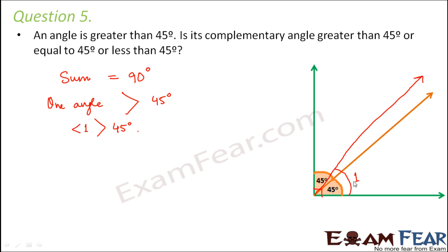If this is angle 1, which one would be angle 2? Obviously the remaining part, because angle 1 plus angle 2 has to be equal to 90 degrees. So this part has to be angle 2. By looking at this part, whether it is less than 45 or more than 45 — the total 45 is this much, and we are considering only this much. So definitely, angle 2 is less than 45 degrees. It is very evident from this figure.